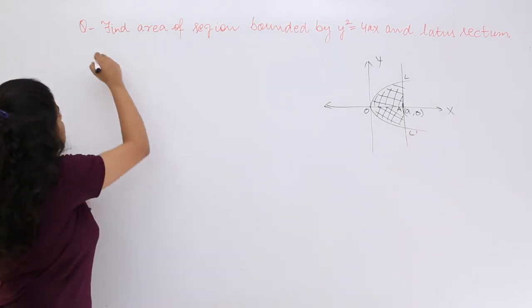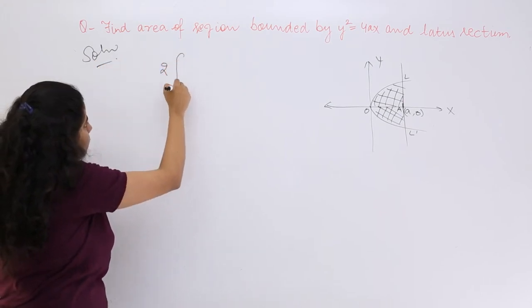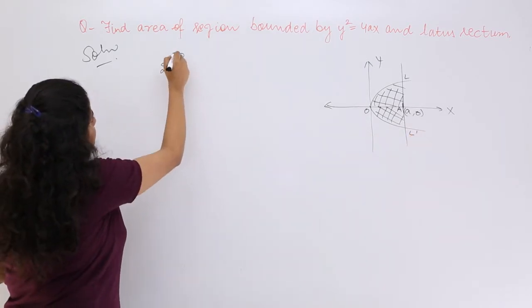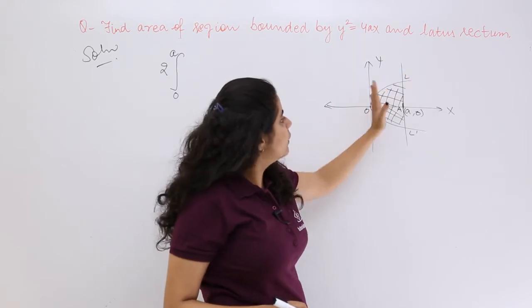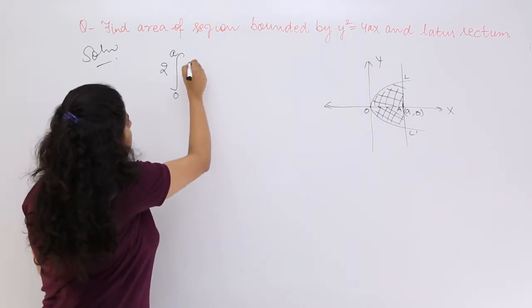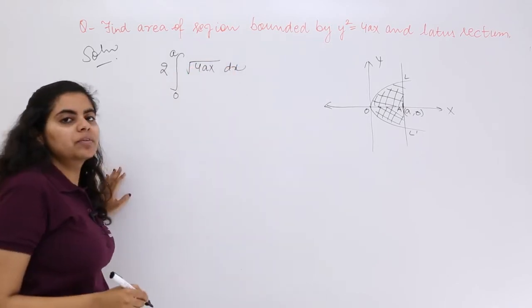So let me write the solution. It is twice the area from 0 to A of this curve, and this curve is nothing but the parabola. So what is the equation? It should be √(4Ax) dx, right?